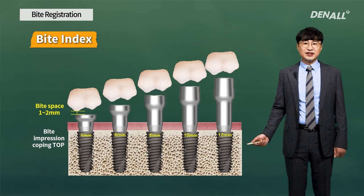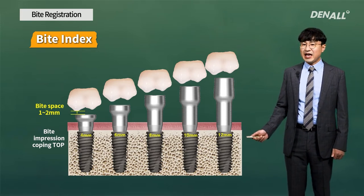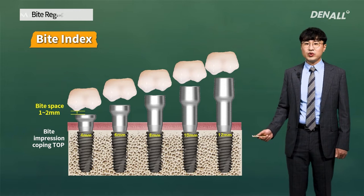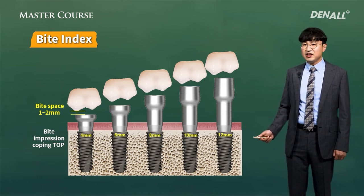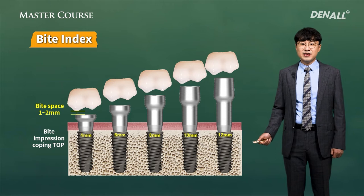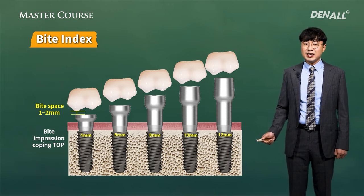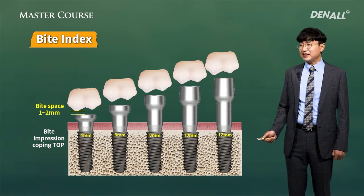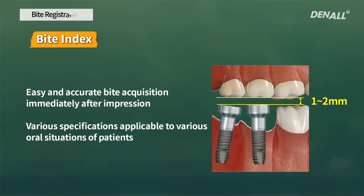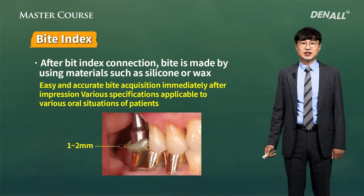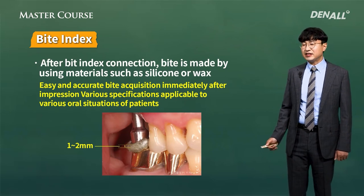The bite index compared to the healing abutment comes in different heights and needs to have a bite space of one or two millimeters. Even using a healing abutment, if there's a bite space of one or two millimeters, there will not be much of a problem. But given that healing abutments are produced only up to a maximum of nine millimeters, if there's high interocclusal space, it's better to use a bite index. It's very important that the bite index does not come in contact with the opposing teeth — that one or two millimeter space is critical. Otherwise, there could be distortion of the bite material.